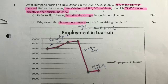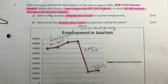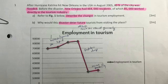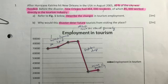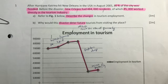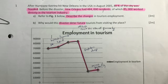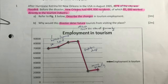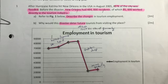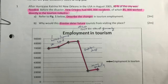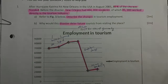There is a graph given for question 1a. You are told to describe the changes in tourism employment. Now a key thing to note here: it is tourism employment that is shown on the graph, not tourism numbers. However, there is a clear link that can be made between tourism employment and tourism numbers.